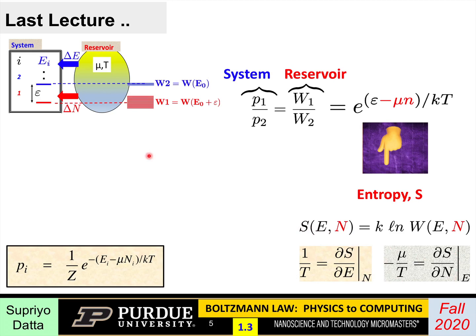What we showed was that this can be written as this form of an exponential where the two parameters, mu and T, are related to the derivative of this entropy function with respect to energy and with respect to the number of particles. So what we'll now do is introduce a model for this reservoir and use it to calculate quantities like W, E, and N so that we get a little more insight into these relations.